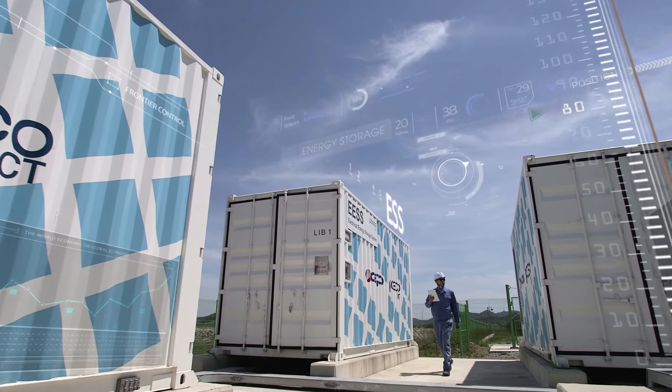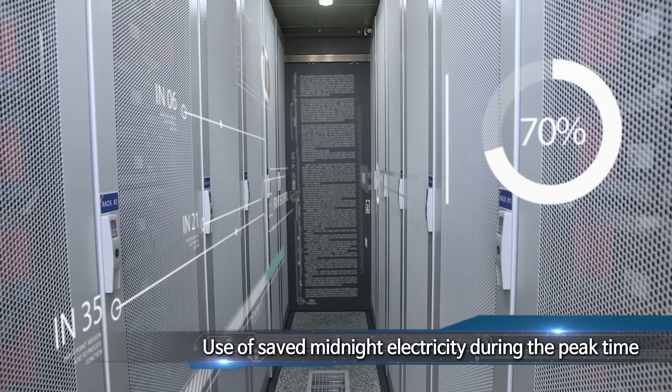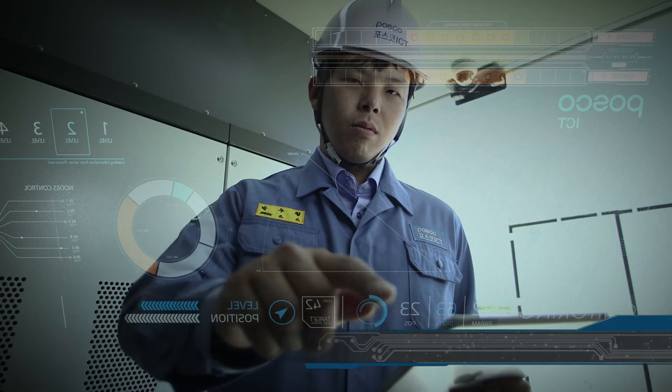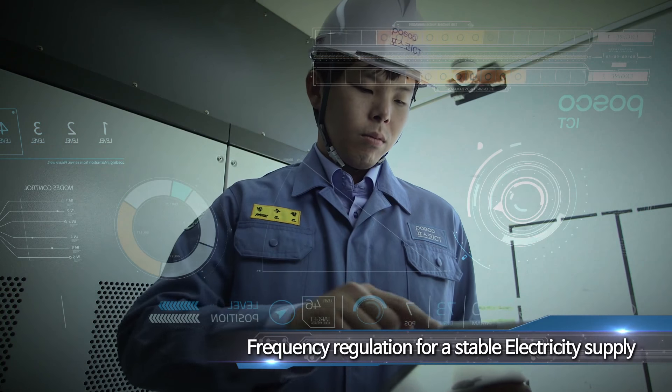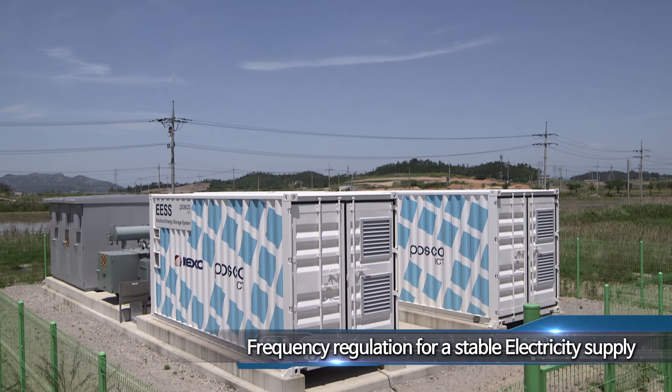POSCO ICT allows midnight electricity to be used during the peak time by supplying ESS and realizes microgrid of islands and industrial complex. It also provides services that prevent a rapid frequency change of supplied power in order to maintain power quality.